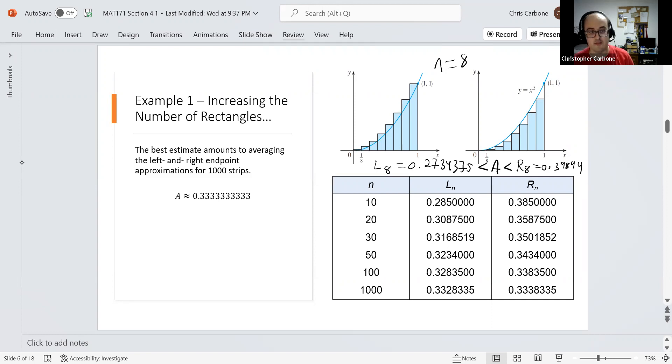We could continue doing this for whatever number of rectangles. We could start seeing it as we increase this, we're starting to approximate a value. We're getting within a range here when we go up to even 1,000 strips, which is fun to calculate, but 0.3328335, the lower end, and the upper end of 0.3338335. And as we could see here, the true area is supposed to be equal to exactly one-third, 0.33333 repeating. So as we increase that number of strips that we have, we are approximating that area.